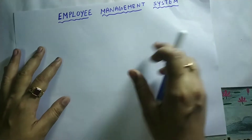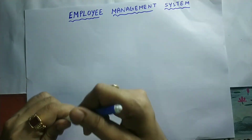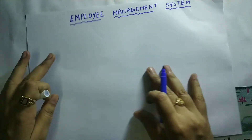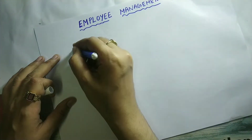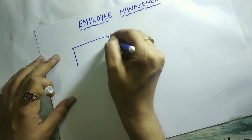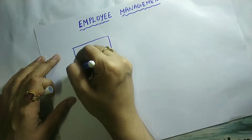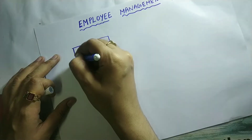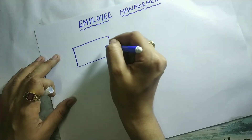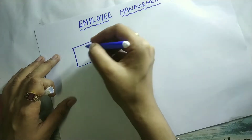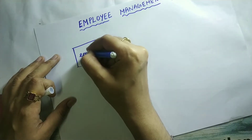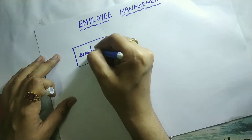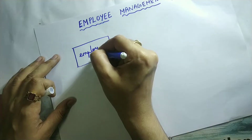An entity must be written inside a rectangular box. So I should draw a rectangular box and write the entity name inside that box. So employee is the first entity name.